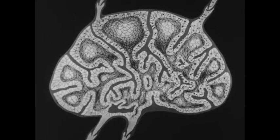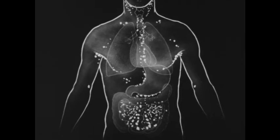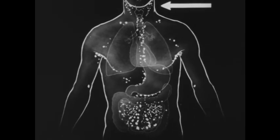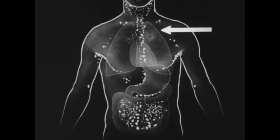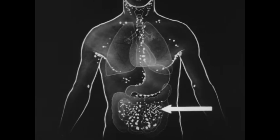This secondary line of defense is well distributed throughout the body. Here are groups of lymph nodes in the neck, and here in the thorax, and here in the abdomen.